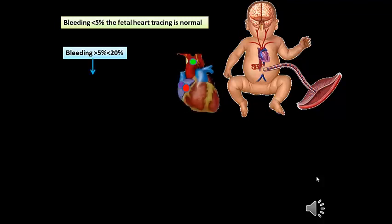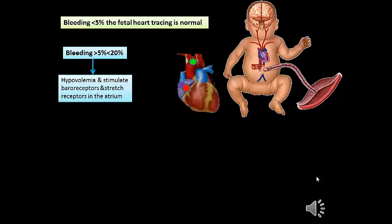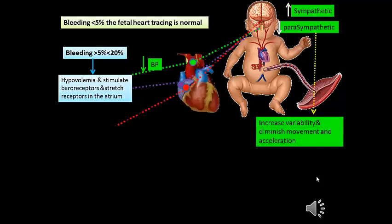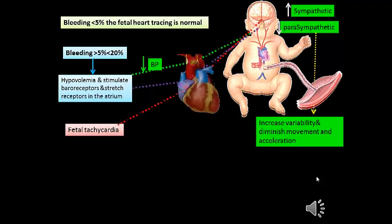In acute blood loss more than 5% and less than 20%, hypovolemia will develop, stimulating the baroreceptors and stretch receptors in the atrium due to the drop in blood pressure. Stimulation of the baroreceptors and stretch receptors activates the cardioregulatory center in the brain, leading to increased sympathetic and reduced parasympathetic tone. This results in increased variability and diminished fetal movement and acceleration.